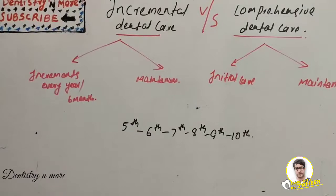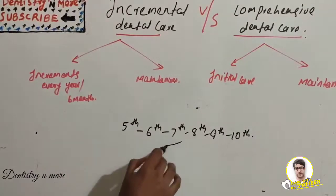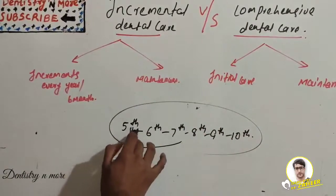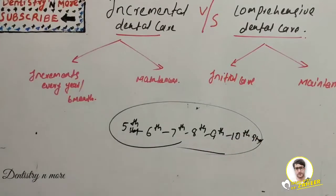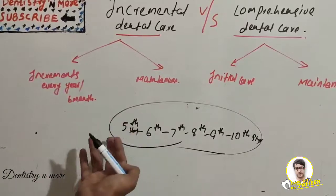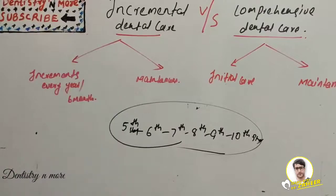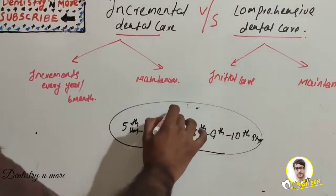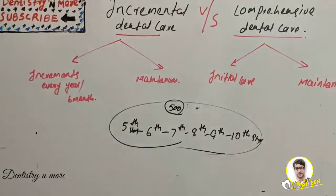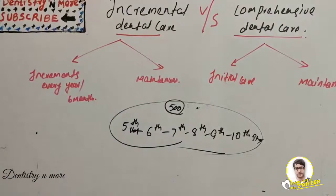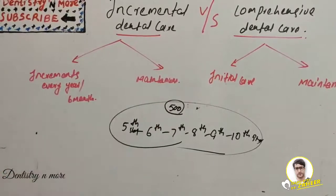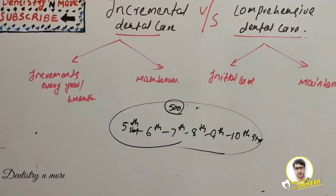I'm going to explain this through scenarios so you get the concept of incremental and comprehensive dental care. Suppose we take an example of a school where students are from fifth standard to tenth standard — an upper primary school with standards five to ten. Each standard may have around 100 or 50 students, so we are planning to provide dental treatment for this group. Let's say we have around 500 students total.